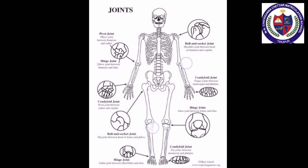Synovial joints: a synovial joint is a joint which makes a connection between two bones. These are the most flexible type of joint between bones because the bones are not physically connected and can move more freely in relation to each other.